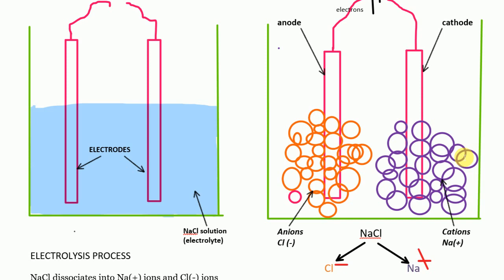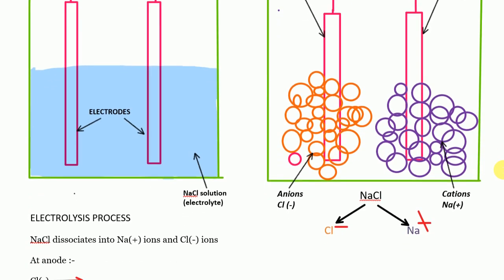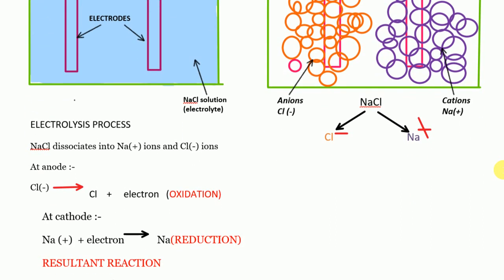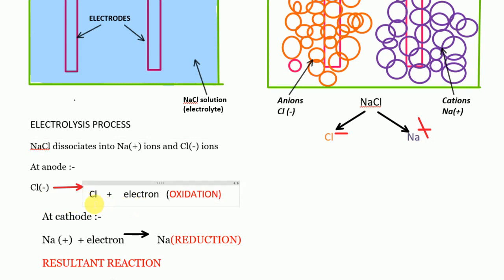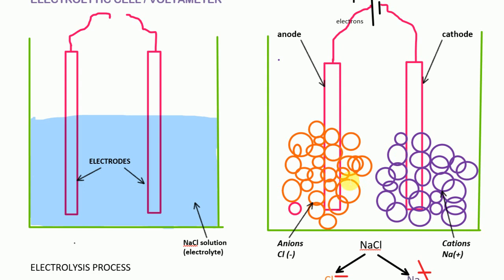At the anode, Cl⁻ is attracted. Cl⁻ is minus because it has one extra free electron. So Cl⁻ will give its extra electron — it loses that extra electron and becomes Cl. This extra electron given by the Cl⁻ ions will then travel through the conductor and reach the battery.